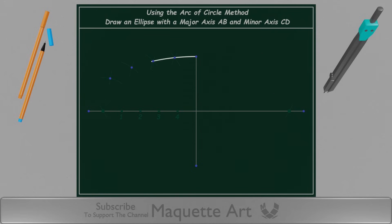Now by connecting those points with a smooth curve, we get the first quarter of the ellipse. You can connect them either manually by hand or using a flexible curve or a French curve.